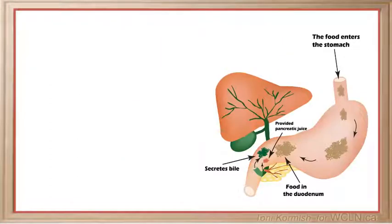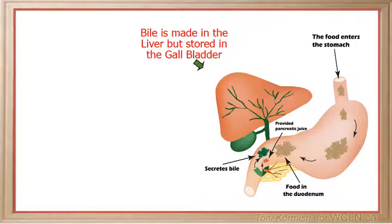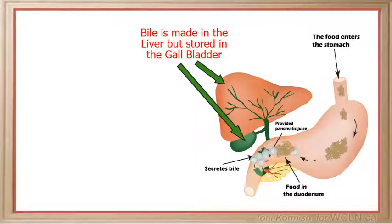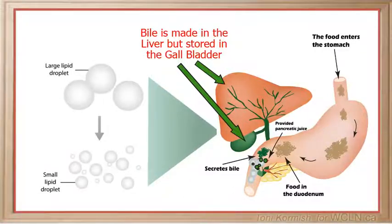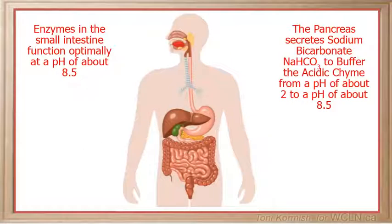In the small intestine, lipids are physically digested further by a chemical called bile. Bile is made in the liver but is stored in the gallbladder. When lipids enter the small intestine, bile is secreted into the small intestine to break the lipids down into fat droplets. This continued physical digestion into fat droplets creates more surface area for enzymes to work on.